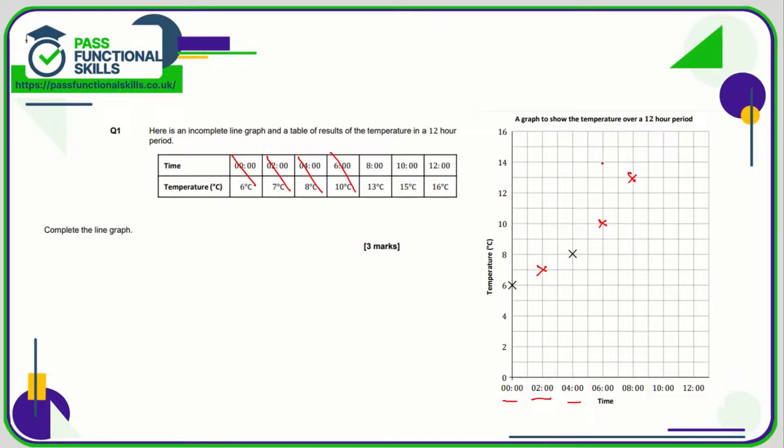At 10am it's 15, so here's 10am, let's go all the way up to 15 which is between 14 and 16. And then at 12 noon it's 16 degrees, so 12, there we go. And what we do now as it's a line graph is using a ruler draw a straight line from each point and we are done.